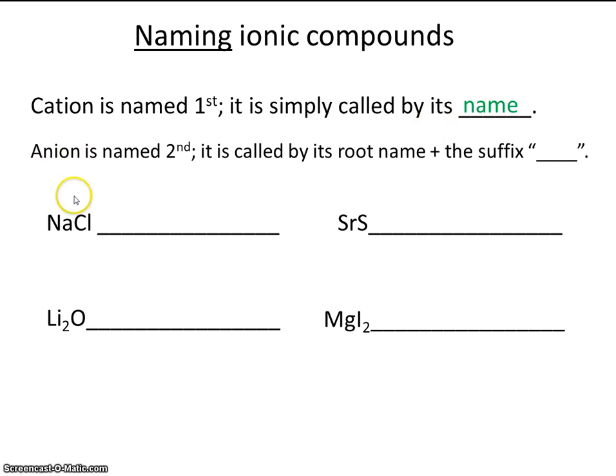The anion—that's going to be the nonmetal, that's going to have a negative charge—will be named second. It's called by its root name plus the suffix '-ide.' So notice that you're changing the name of chlorine to chloride. So this is called sodium chloride.